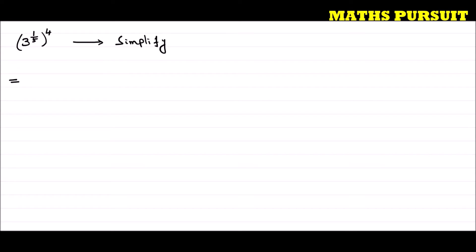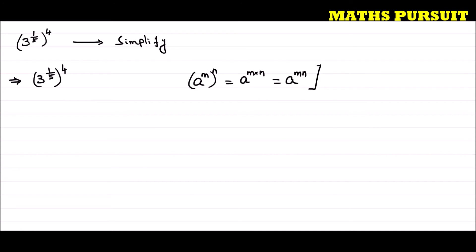The given expression is 3 to the power 1 upon 5, to the power 4. To simplify this, we are going to take the help of the identity: a to the power m, to the power n, is equal to a to the power m into n, or simply a to the power mn. We will use this identity to solve the given expression.